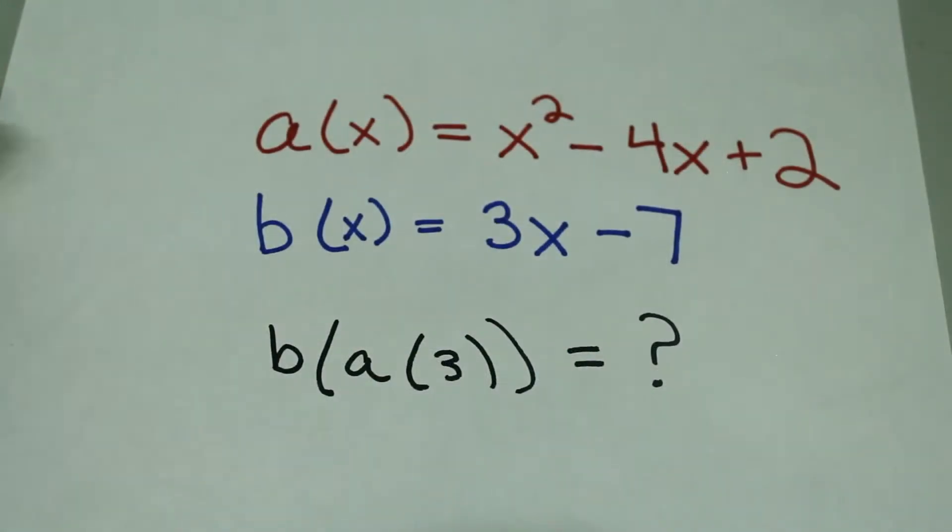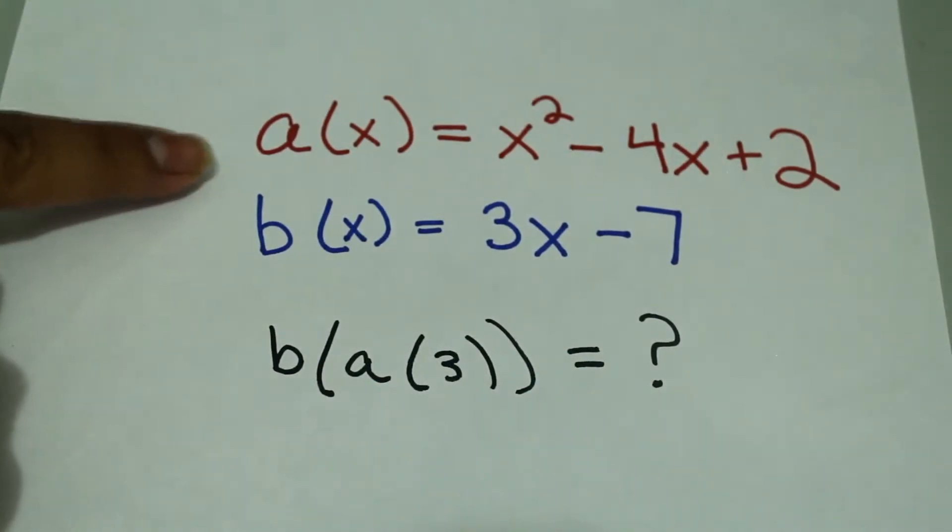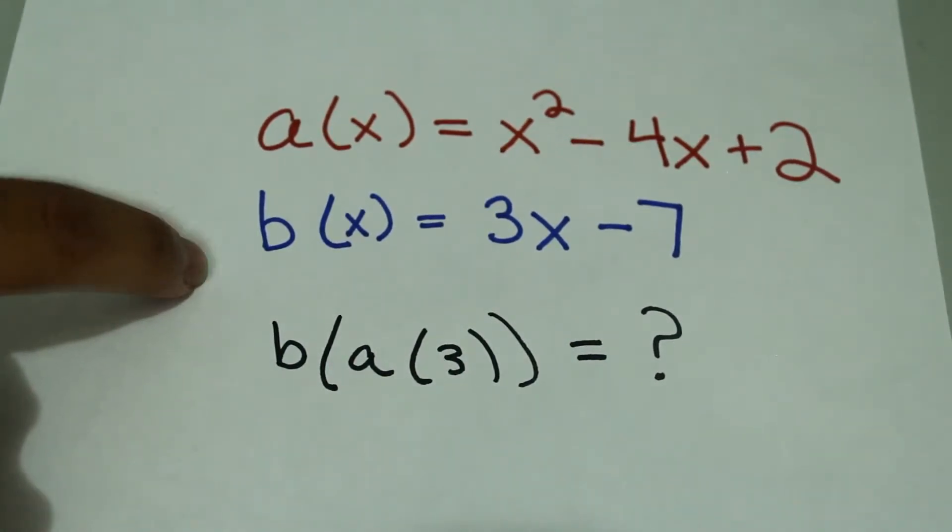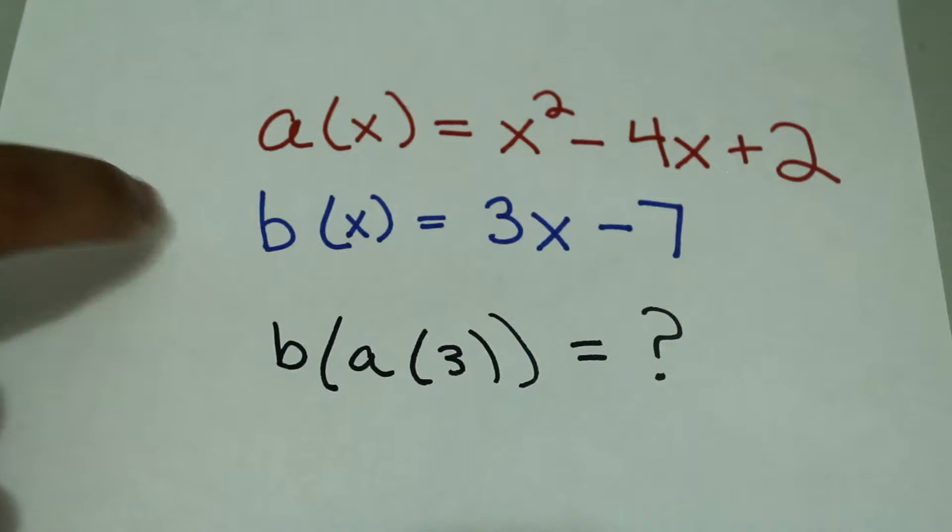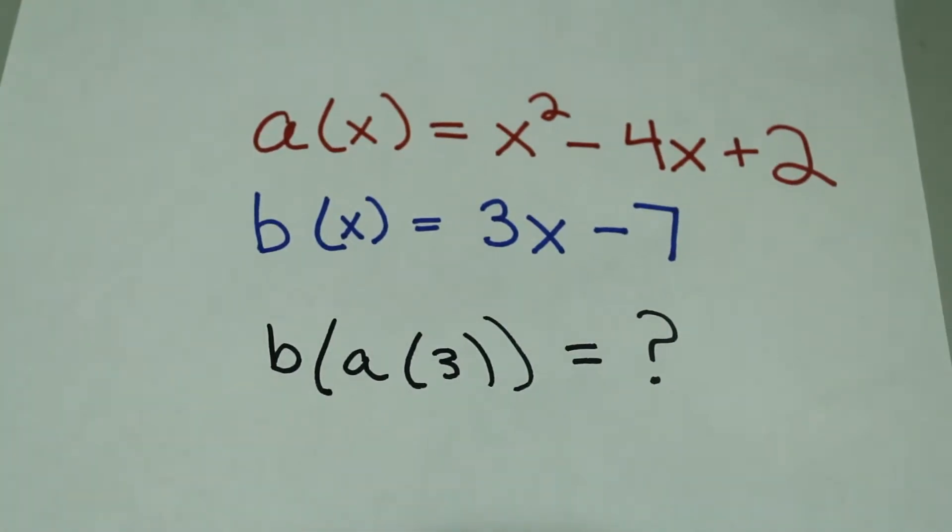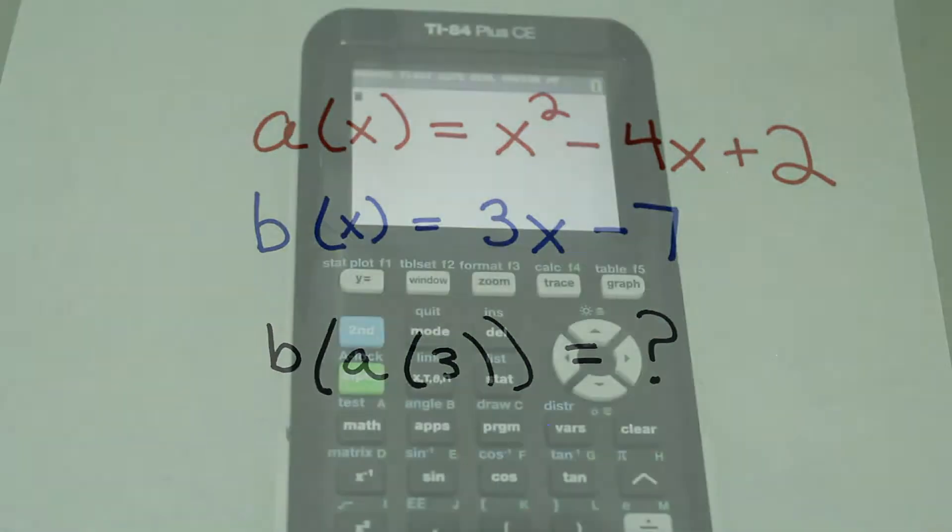I'm going to use these two functions: a(x) = x² - 4x + 2 and b(x) = 3x - 7, and we're going to find b(a(3)). You might want to note these down if you want to follow along.